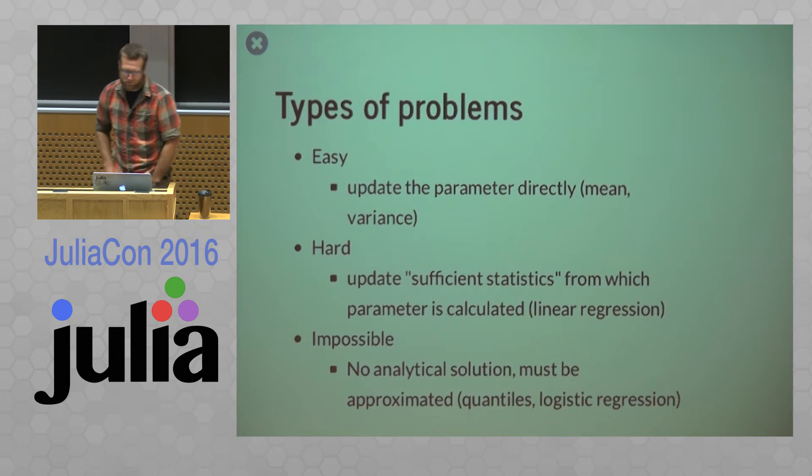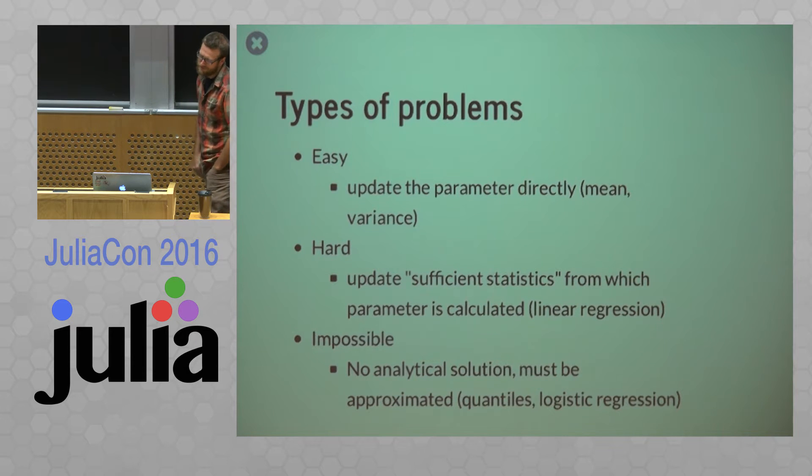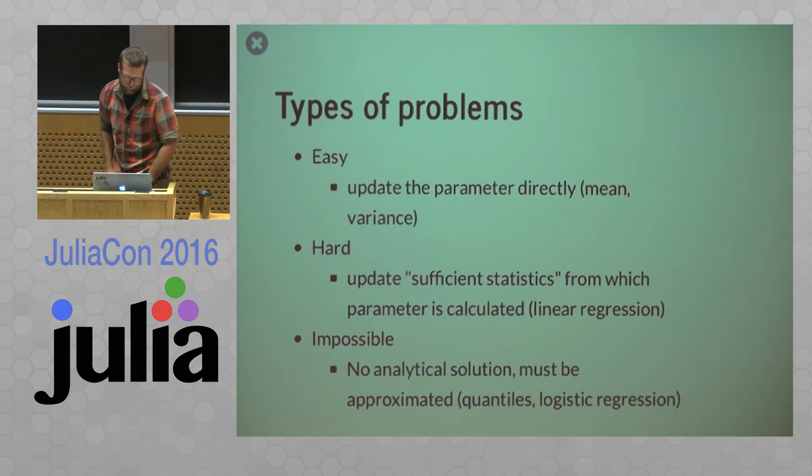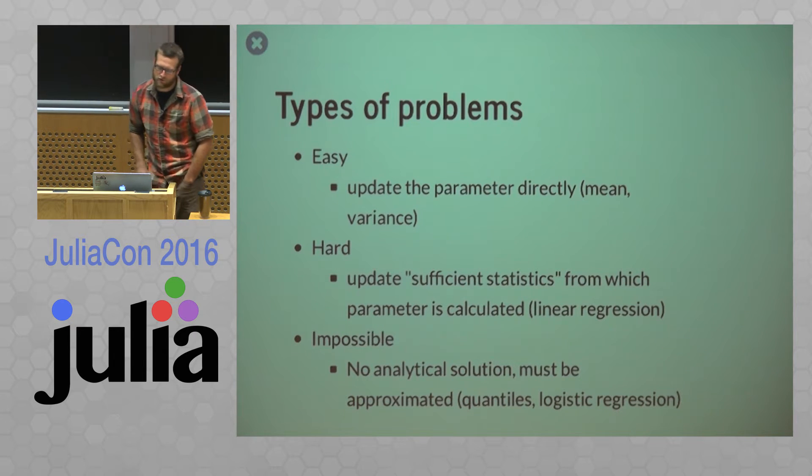So I'm oversimplifying things quite a bit here but these are basically the types of problems we're running into for these big data applications. So we have easy problems and these are things where you can update the parameter directly. Things like a mean and a variance.